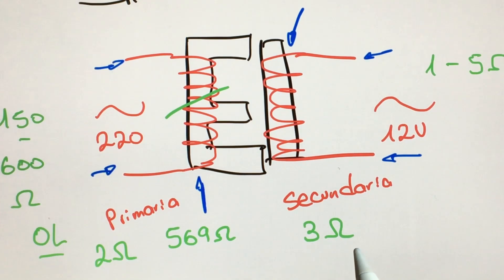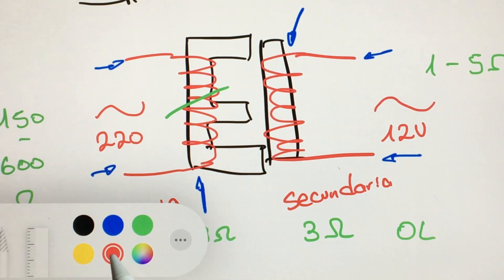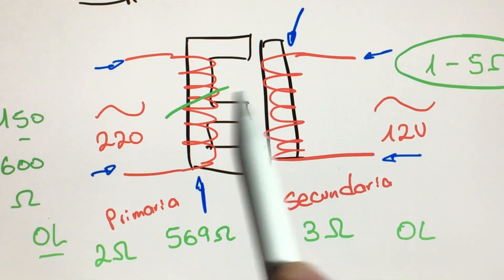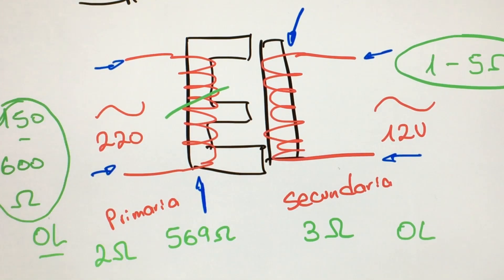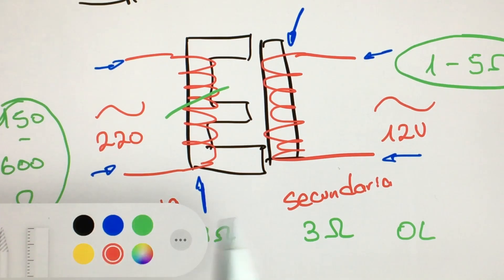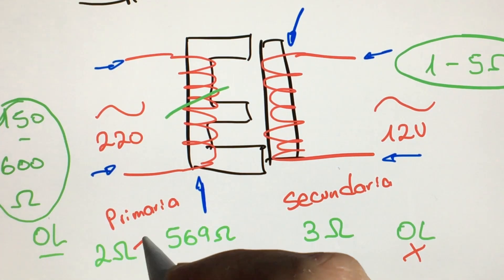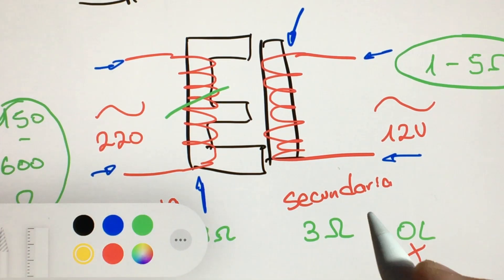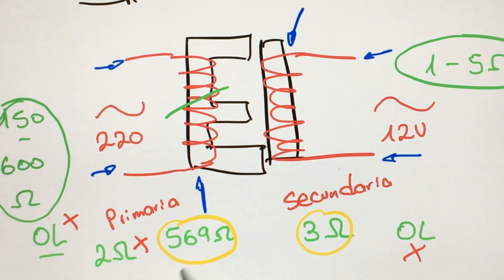And it would be the same on the secondary side. If I have a very high resistance, surely something has charred, and if I get O.L., obviously this coil has been cut. Taking into account the parameters, within all normal that a transformer brings, you can know if it is in good condition. In this case O.L. is bad, 2 ohms would be bad. And these are the values we just found in the sample transformer.